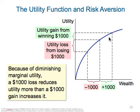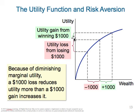Because of this diminishing marginal utility — where the curve flattens and would eventually decline — a $1,000 loss in utility is greater than a $1,000 gain in utility. You have a bigger drop in utility than a gain, so you probably shouldn't take the gamble. That's risk aversion.